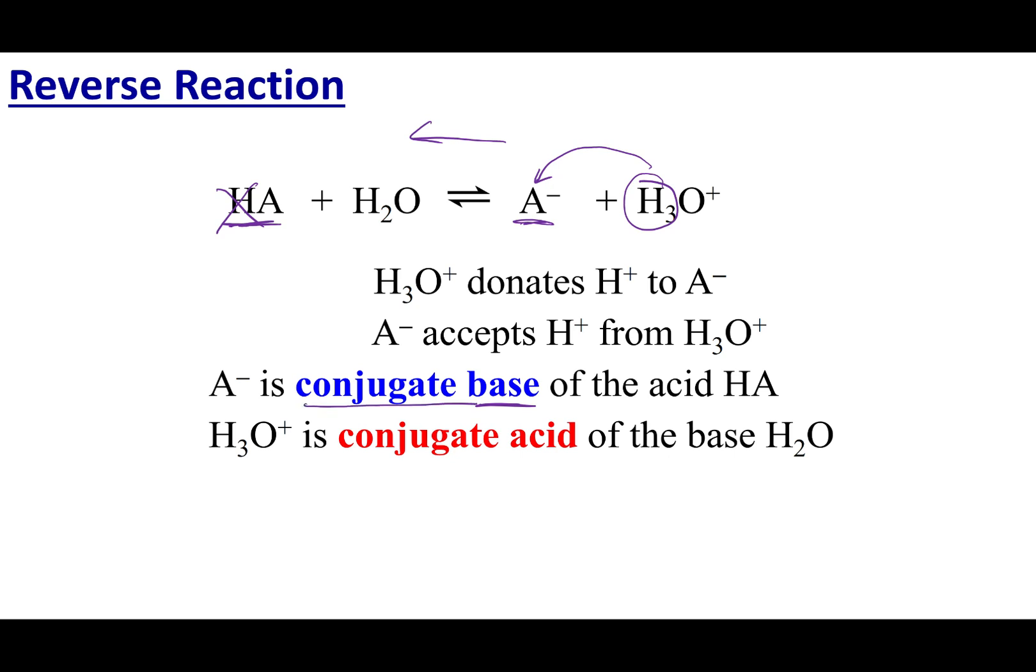So conjugates only differ by one H+ ion. The same thing can be said with H3O+. So H3O+ is an acid. If I go ahead and look at the reaction in the reverse, it donates this H+. So if it donates an H+, it's considered an acid.